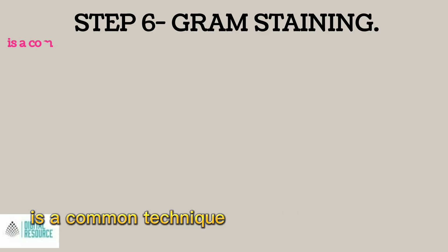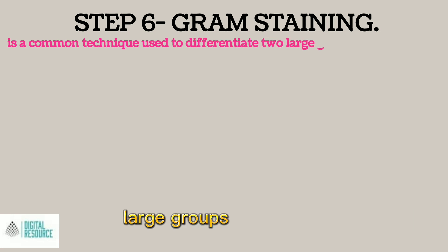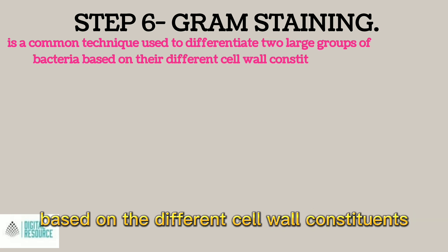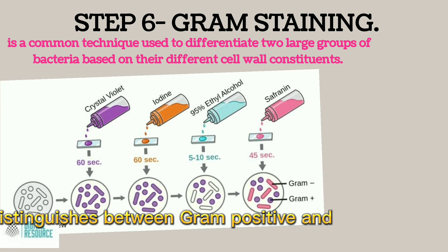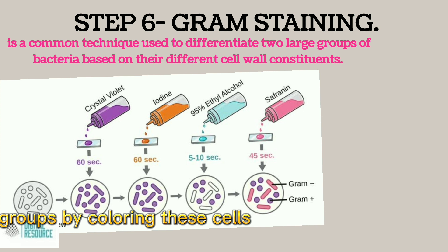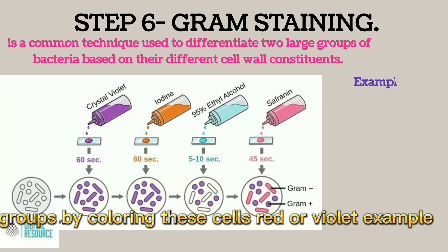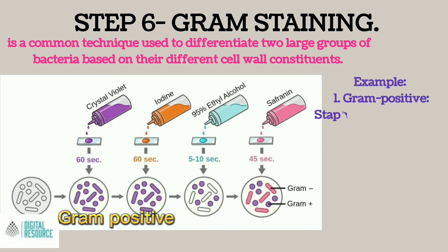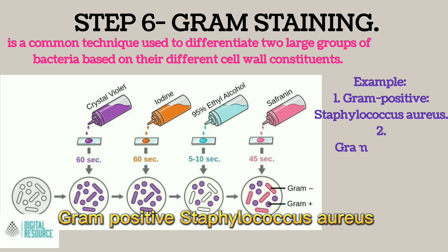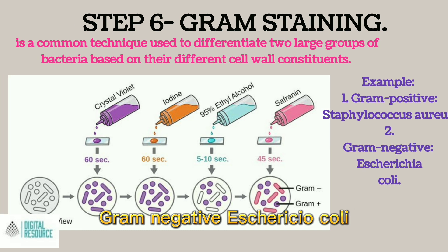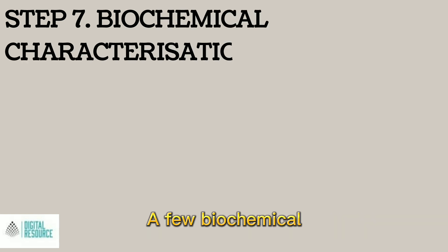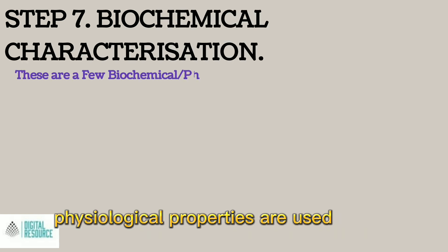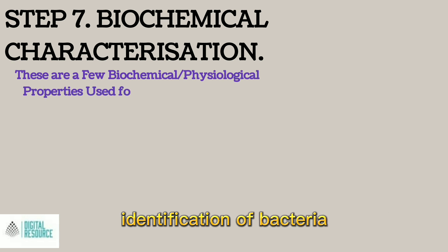Step 6: Gram Staining is a common technique used to differentiate two large groups of bacteria based on different cell wall constituents. The Gram Stain procedure distinguishes between Gram-positive and Gram-negative groups by coloring these cells red or violet. Example: 1. Gram-positive — Staphylococcus aureus. 2. Gram-negative — Escherichia coli.